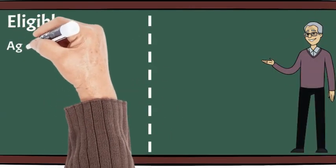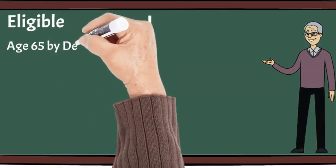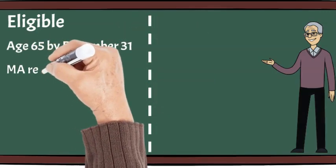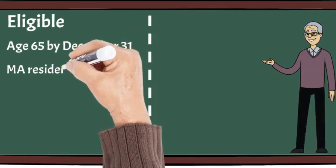To be eligible for the circuit breaker credit, you must be 65 years old by December 31st of the tax year you are filing for and you must have been a Massachusetts resident for at least part of the year.